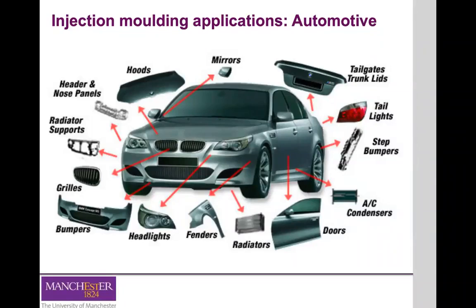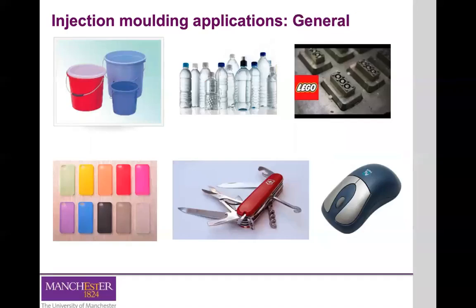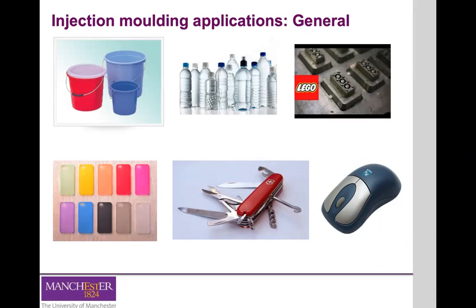It's not just in highly specialized industries that injection molding has gained space. We have applications across a wide range of products — from buckets and plastic bottles to Lego parts. Lego illustrates the advantage of this technique well: the need to produce thousands of parts that are highly precise in terms of geometry and dimension, with different colors and transparent materials. All of that has made injection molding and polymers extremely important for a wide range of industries.